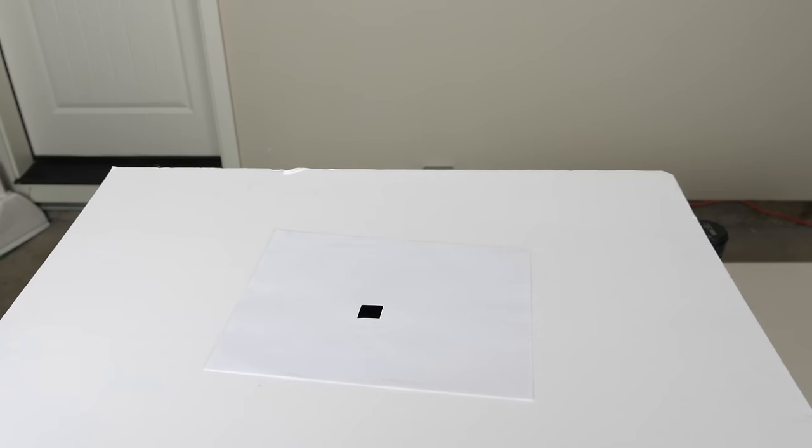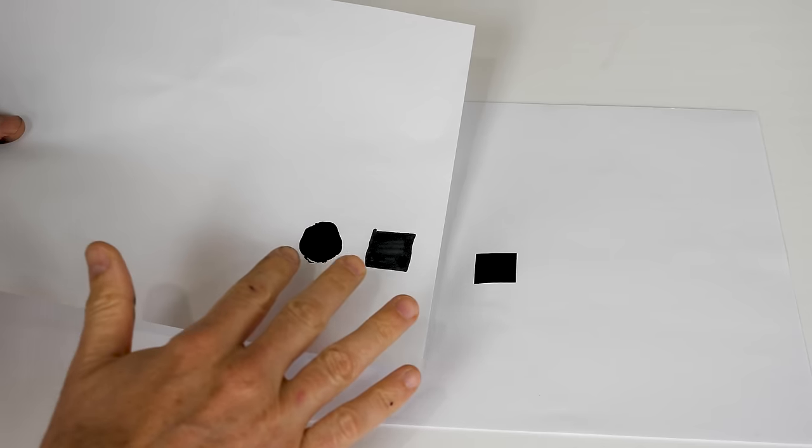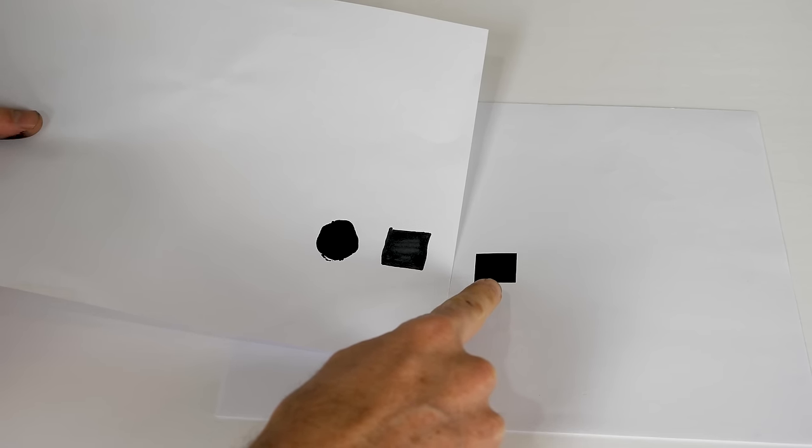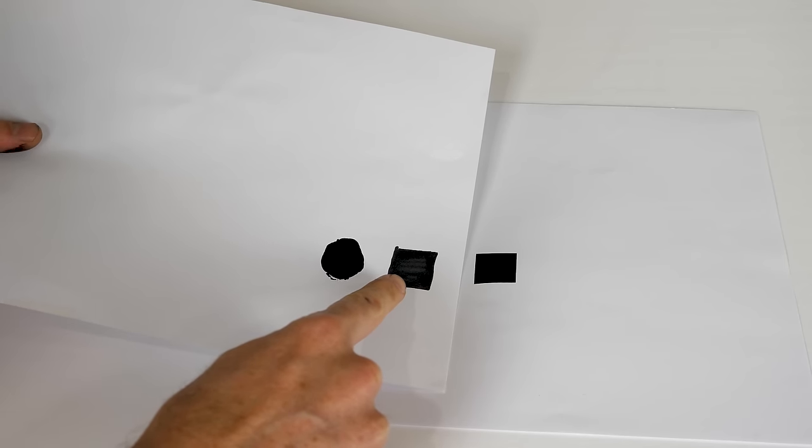Okay, so here it is on this piece of paper here. I don't have any Vantablack to compare it to, but I have two other blacks here to compare it to. So this is my black that's darker than Vantablack. This is black 2.0 and this is a black Sharpie.